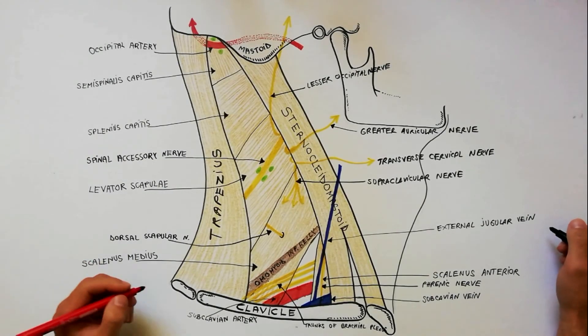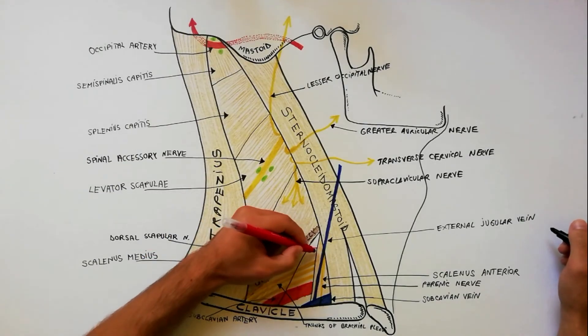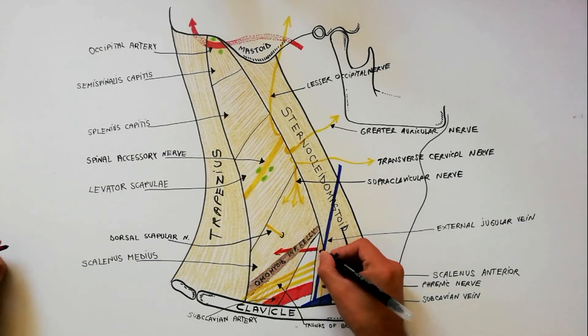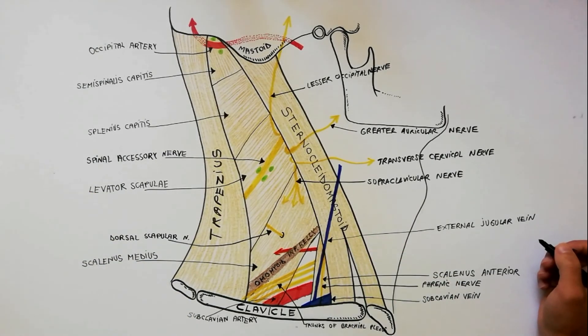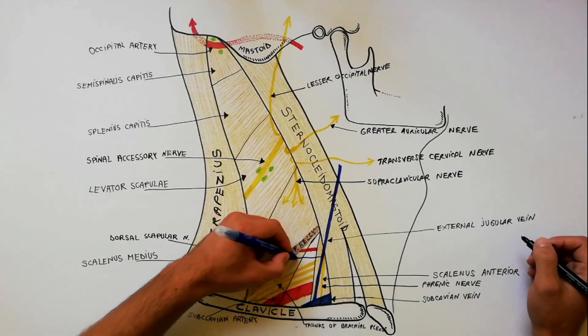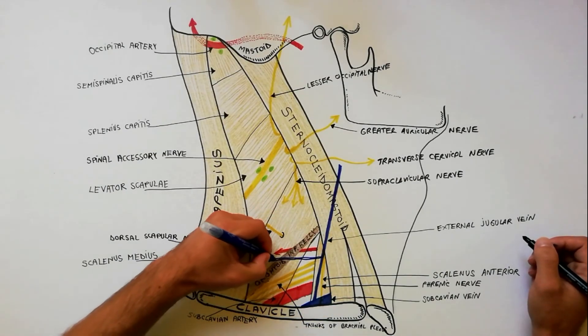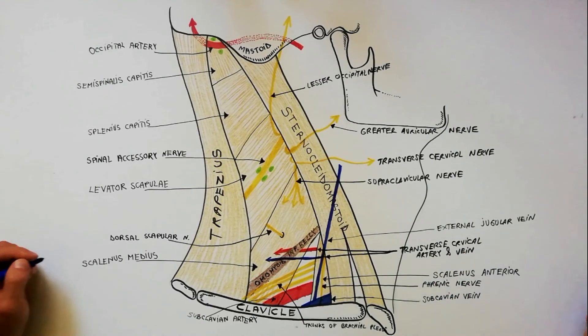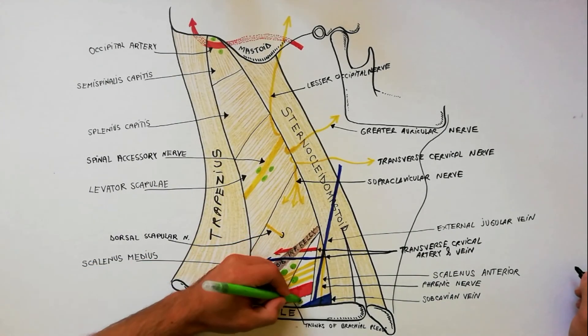In the subclavian triangle, apart from the structures already indicated, are also present the transverse cervical artery, a branch of the thyrocervical trunk, the transverse cervical vein, a tributary to the external jugular vein, and numerous supraclavicular lymph nodes.